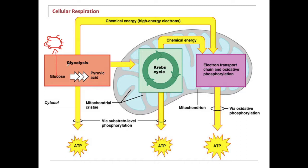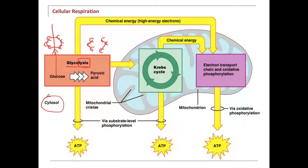When we take glucose and break it down, that's called glycolysis. The word glycolysis means to break down. What we're doing to this glucose is splitting it right down the center. When you split it, what you're left with are two three-carbon sugars — that's called pyruvic acid. That's all glycolysis is. And this takes place in the cytosol — it's in the cell, but in the cytosol, not in the mitochondria.